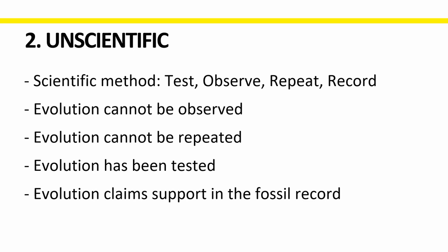Evolution cannot be observed. Evolution cannot be repeated. It has been tested on bacteria and on flies, but what we find after hundreds of generations of bacteria and flies is that bacteria remain bacteria, flies remain flies, finches remain finches, dogs remain dogs, and humans remain humans. Evolutionists do claim to have support in the form of the fossil record, but we'll look at that a little bit later in this video.